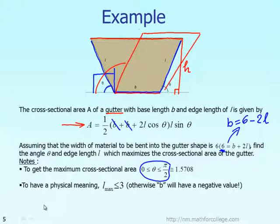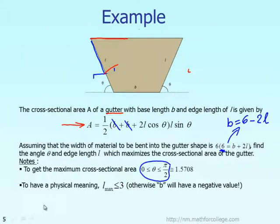That is the first observation to see the lower bound and upper bound of the variable theta. Theta should be between the lower bound 0 and upper bound approximately 1.57. Also, the variable L should be less than or equal to 3. If the length L is bigger than 3, then the length B will have a negative value, which has no physical meaning.